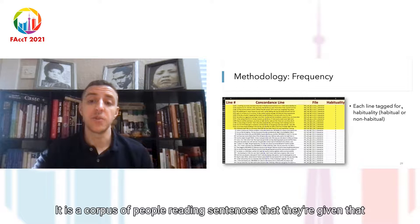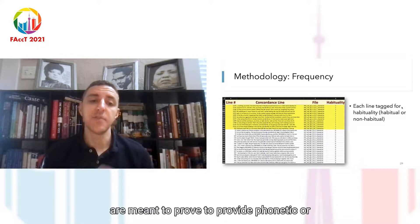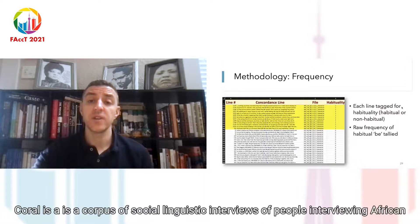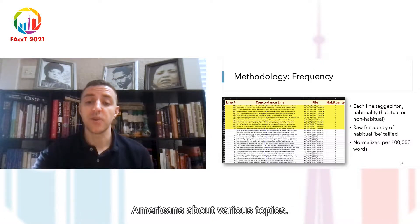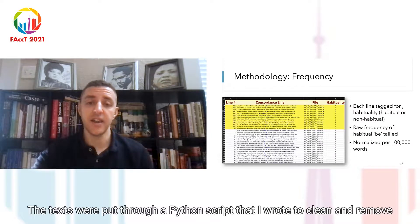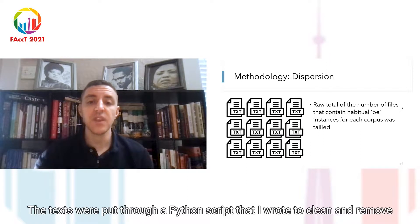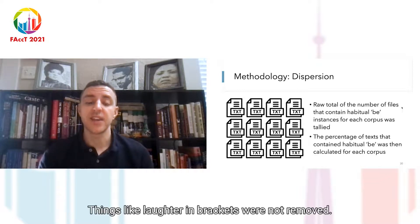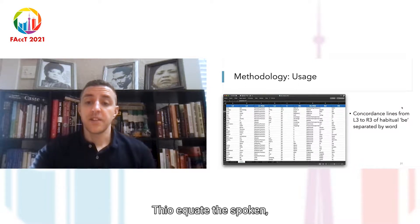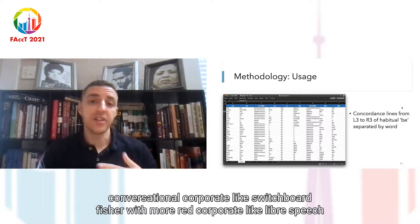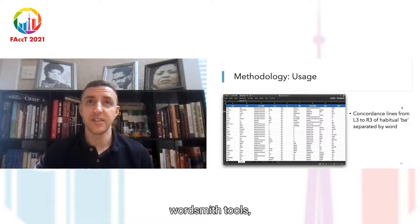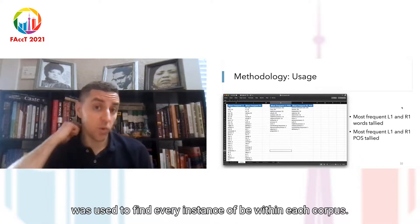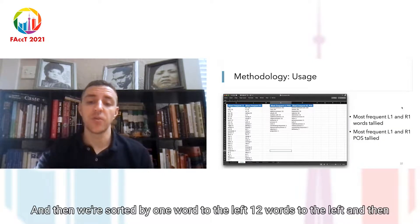Each line was then tagged for habituality — each line was read to see if the B in that sentence encapsulated the habitual characteristic or not. The raw frequency of habitual B was tallied and normalized per 100,000 words to give an accurate comparison between the different size corpora. A raw total number of files containing habitual B instances was tallied, and the percentage of texts containing habitual B was calculated for each corpus. Finally, for usage, concordance lines were divided from L3 (three words to the left of B) and R3 (three words to the right of habitual B) and separated by word. L1 and R1 parts of speech were tagged, and the most frequent L1 and R1 word types and parts of speech were tallied.